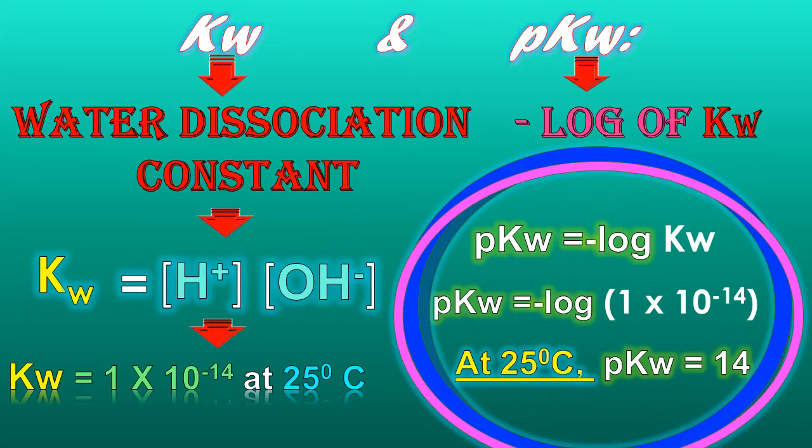So putting this value in the equation, we get PKW = -log(1 × 10^-14). When we take out the log of 1 × 10^-14, the answer becomes 14. So PKW = 14.